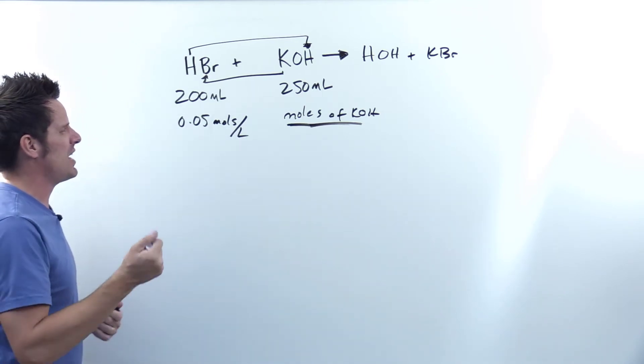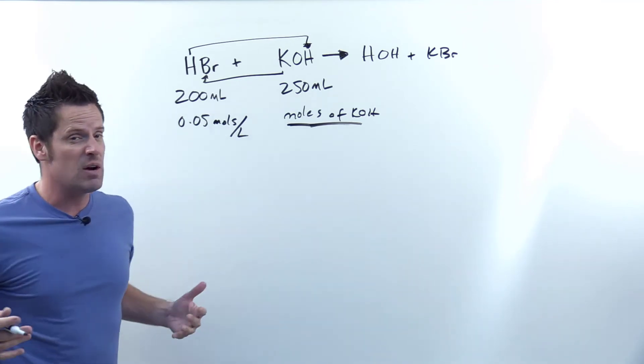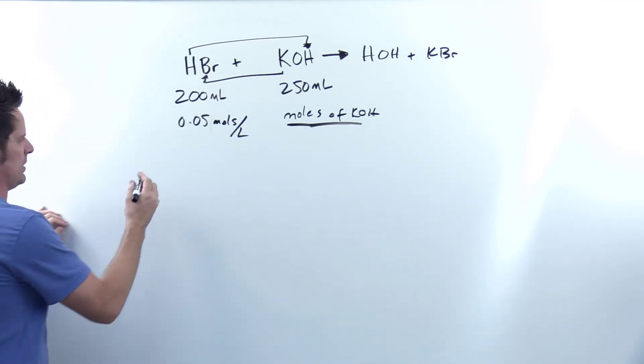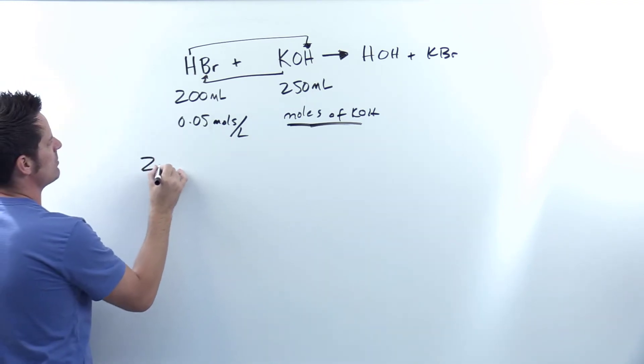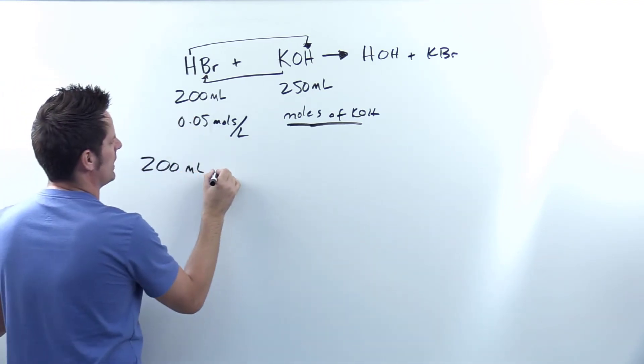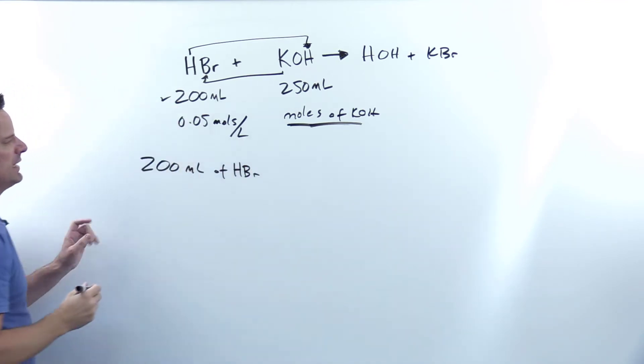So I'm going to write down 200 milliliters, and then to keep everything organized, I'm going to write specifically of HBr. So I've used my 200 milliliters.